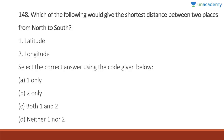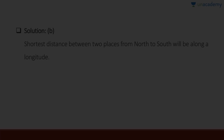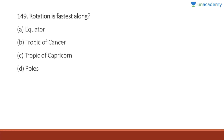Question 148: Which would give the shortest distance between two places from north to south? The shortest distance would be along a longitude, not a latitude, because we are talking about north to south direction. Answer is B, two only.